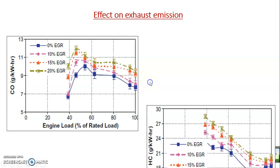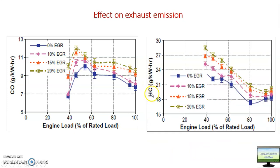For hydrocarbons, this will also increase when NOx is reduced. At 80% load, hydrocarbon increases from around 19 g/kWh to around 20 g/kWh — a 1–3% increase. So as already explained, if you reduce NOx, CO and hydrocarbon content will increase, but the increase is not that significant for 10% EGR or even up to 15% EGR, depending on load.